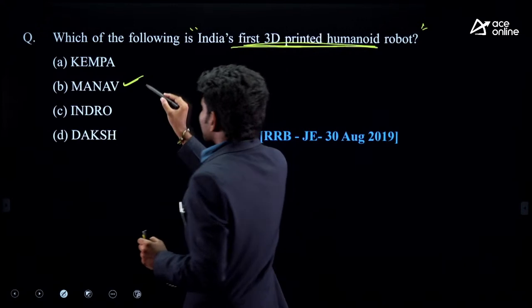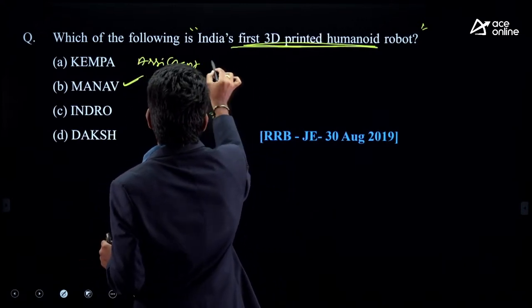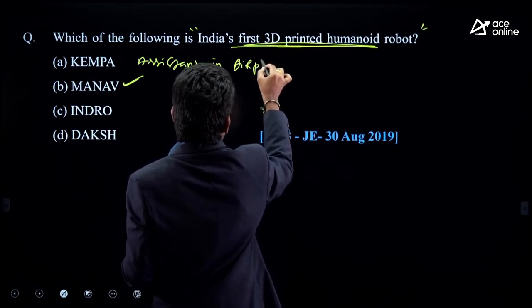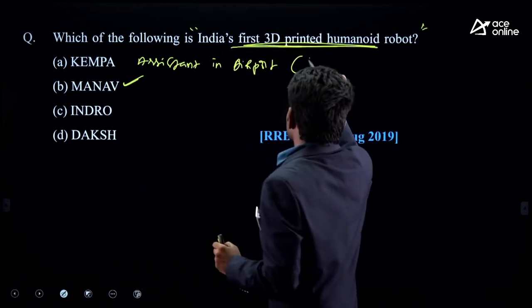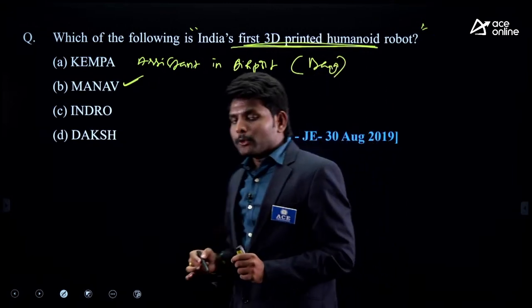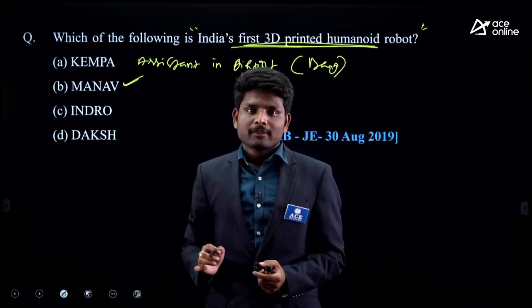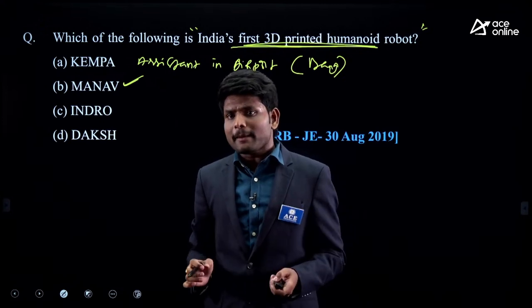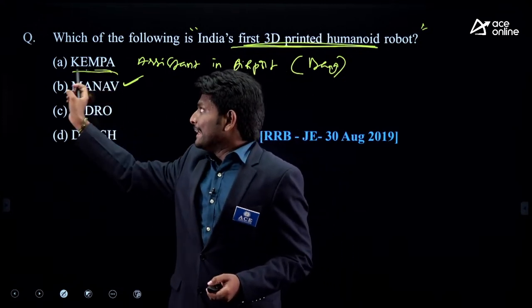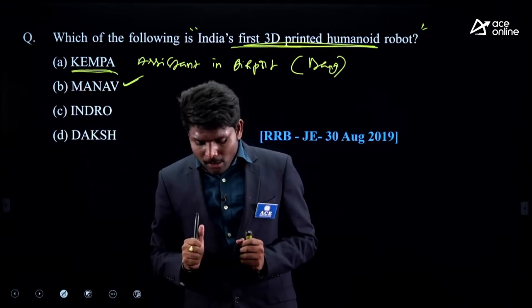Kempa is a robot assistant in the airport — you can find Kempa in Bangalore airport. It acts like a human but is a robot, working as an air hostess assistant. This year they asked about a 3D printed humanoid robot — that's why I chose MANU as the answer.